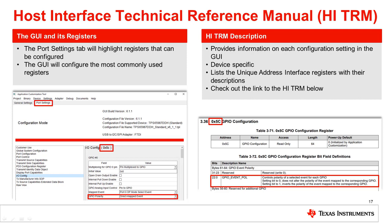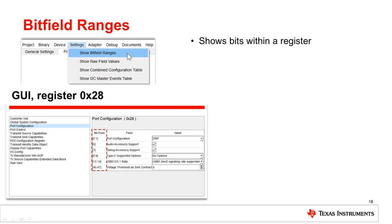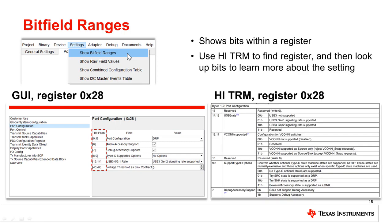A link to the Host Interface Technical Reference Manual can be found below. To find the bit associated with a setting in any register, select Show Bit Field Ranges from the Settings tab. This will display the bit position next to the setting. Once you know the bit number, you can read more about it using the host interface.